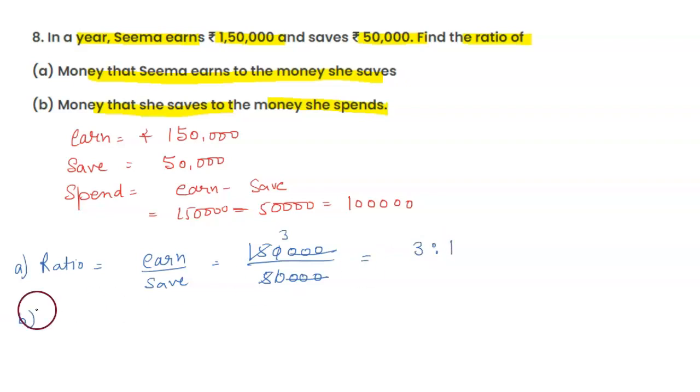Part (b): Money that she saves to the money she spends. Save is 50,000 and spend is 1,00,000. Canceling zeros, 5 to 10 simplifies to the ratio 1:2. Thank you.